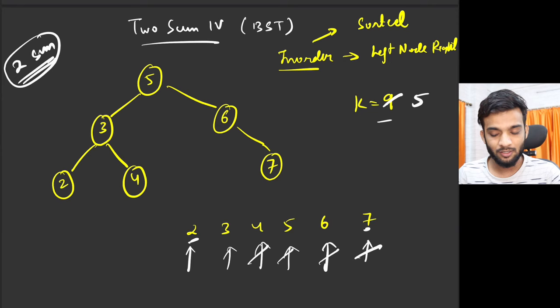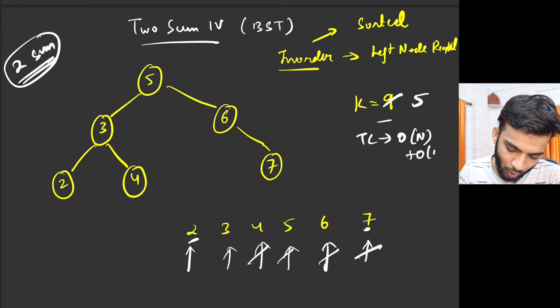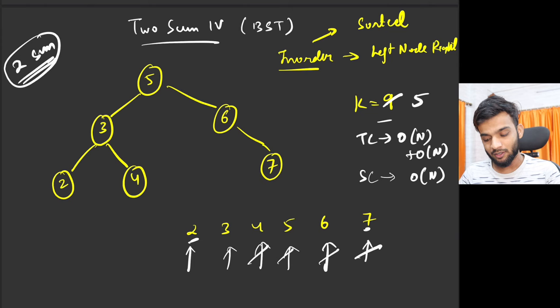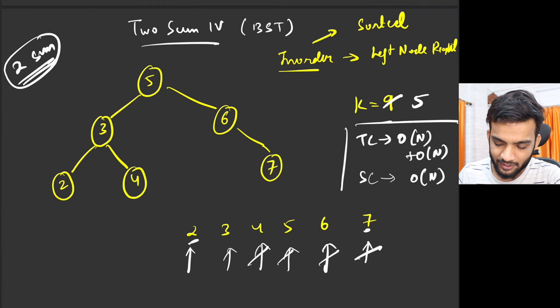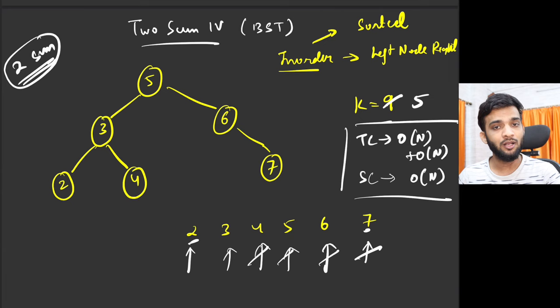The time complexity here is O(n) to convert to in-order, plus O(n) for the two-pointer — so O(n) overall. The space complexity is O(n) to store the in-order traversal. This method will get an accepted solution on any platform, but in an interview you need to present the better, optimal approach.